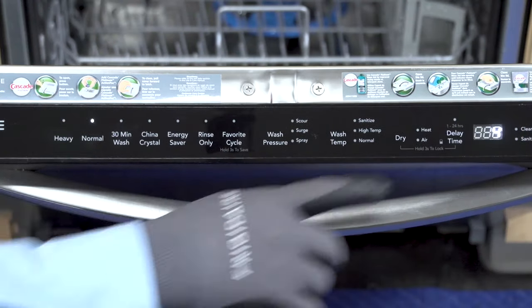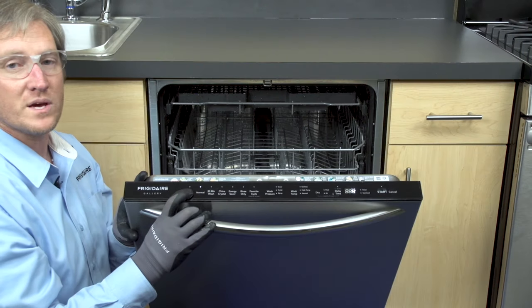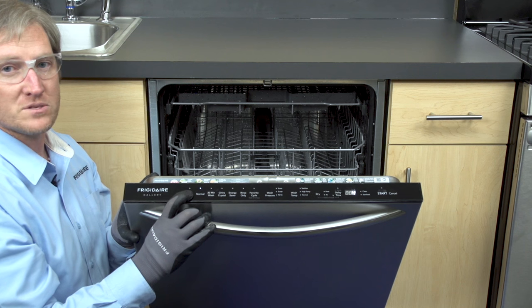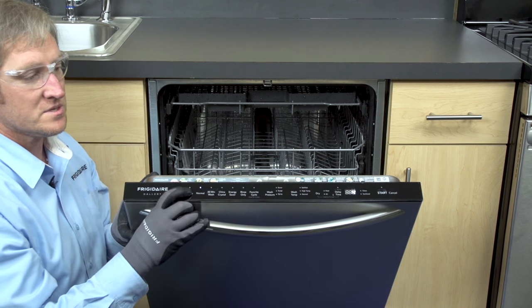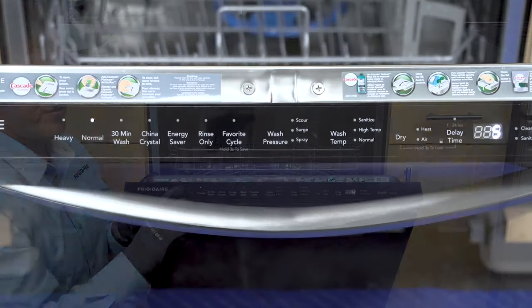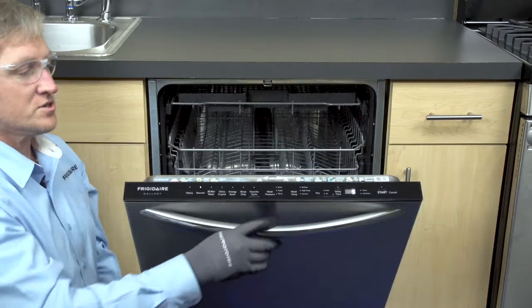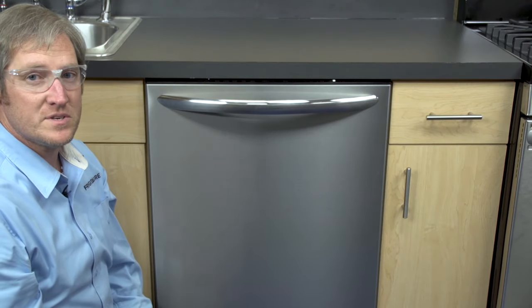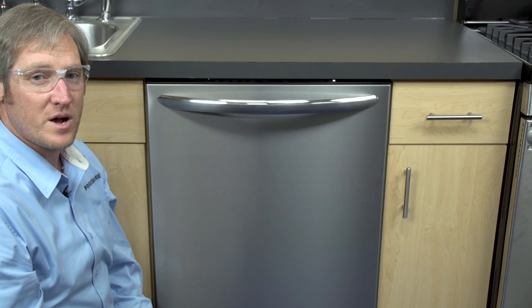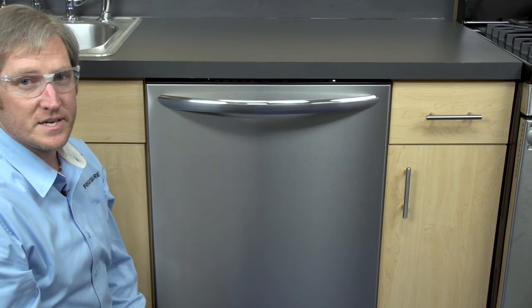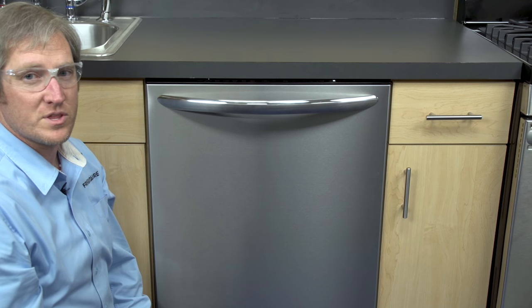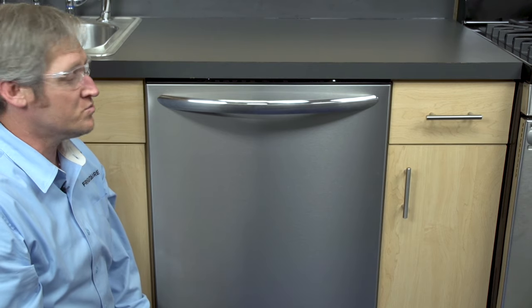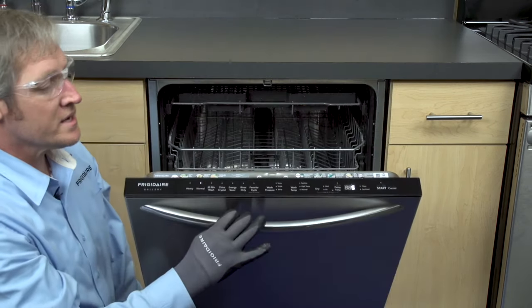I'm going to go ahead and hit the first button again. We're going to go to test number four. Now test number four is for what they call the regeneration valve, that's on European models, not on the North American sold units. We don't have water softeners inside of our units, so we're going to jump to test number five. Test five is our drain pump. Once we shut the door, it's going to activate our drain pump. I did have some water left inside of my unit. The drain pump is running right now.